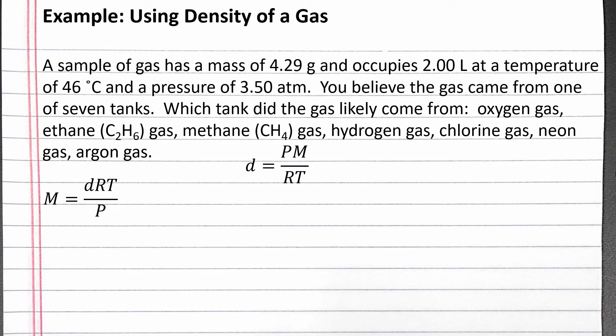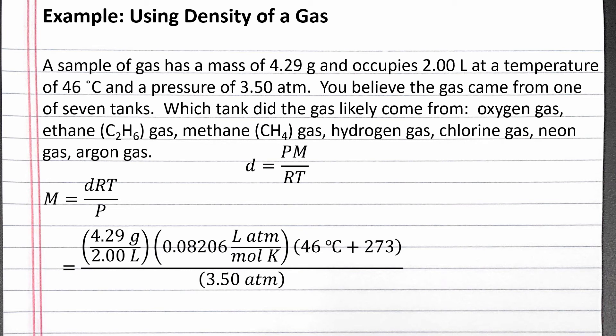We're not given the density directly in this problem, but the units for density in this equation are grams per liter. So we can substitute 4.29 grams per 2.00 liters in for the density of the gas. We're also given the temperature in degrees Celsius. We can convert to Kelvin by adding 273, and we can substitute the pressure directly into this equation since it is already given in atmospheres.